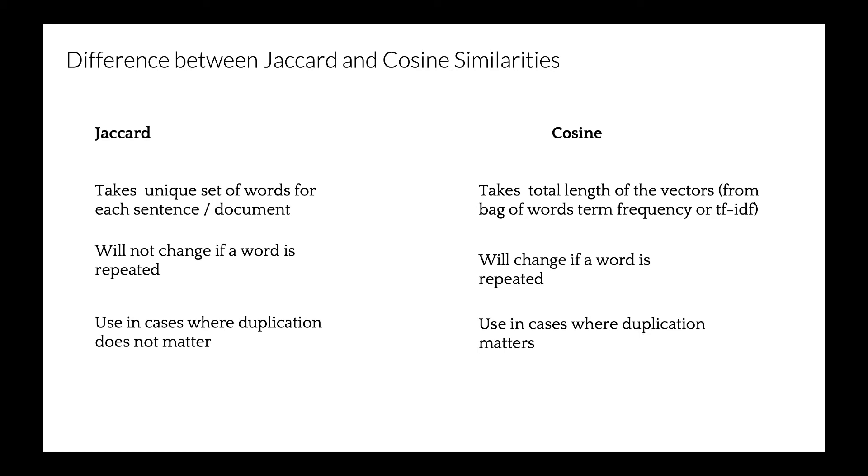And cosine similarity is good for cases where duplication matters, when we analyze text similarity. Example for a good use for Jaccard similarity would be two-product description comparison, where repetition of the word does not reduce their similarity.